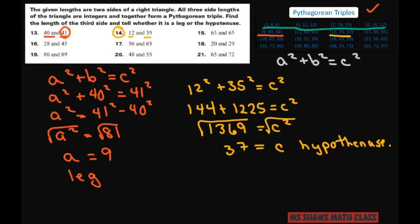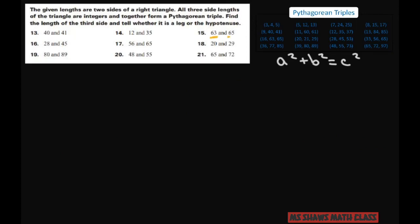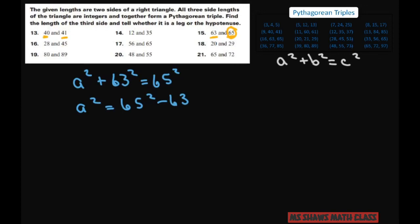Now we have 63 and 65. You see how these numbers are close together — so probably 65 is your hypotenuse. So: a² + 63² = 65², which gives a² = 65² − 63² = 256. Take the positive square root of both sides and you get a = 16.